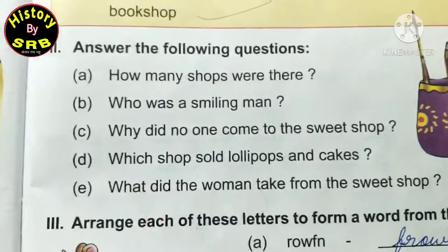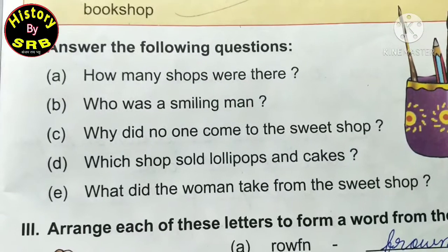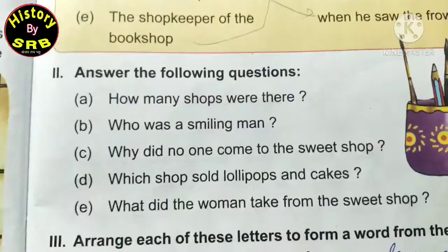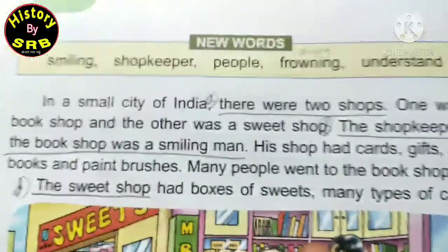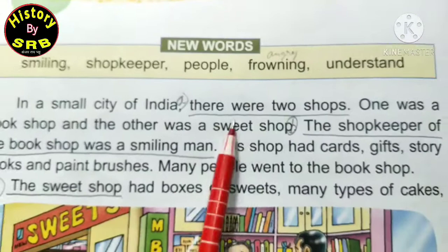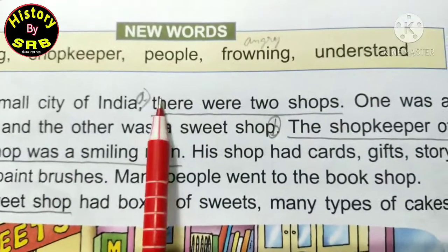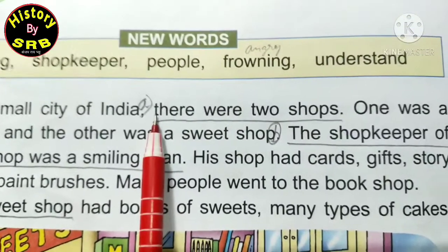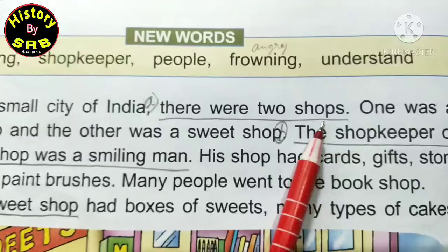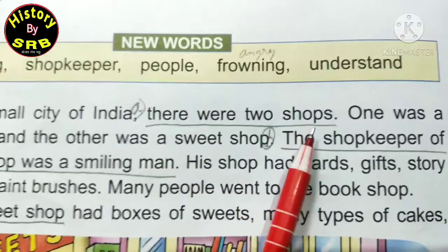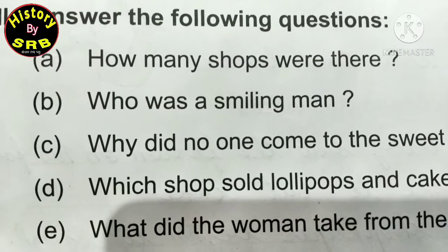First question: 'How many shops were there?' - yaani kitni dukanen thi? Do dukanen thi. Answer aapki book mein yahan par hai - 'there were two shops'. Aapko yahan small letter se start hai, to capital T likhna hai. Aap same to same ise apni copy mein answer mein likhenge - 'There were two shops'.